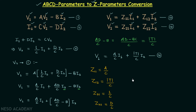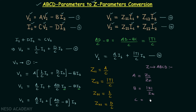This completes the conversion of ABCD parameters to Z parameters. For the reverse conversion — Z parameters to ABCD parameters — use equations 3 and 4 to derive the forms of equations 1 and 2. The results are: A = Z11/Z21, B = det[Z]/Z21, C = 1/Z21, and D = Z22/Z21. These conversions are useful when solving network problems.